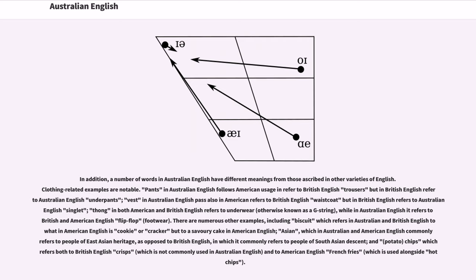There are numerous other examples, including biscuit which refers in Australian and British English to what in American English is cookie or cracker but to a savory cake in American English. Asian, which in Australian and American English commonly refers to people of East Asian heritage, as opposed to British English, in which it commonly refers to people of South Asian descent. And potato chips which refers both to British English crisps, which is not commonly used in Australian English, and to American English French fries, which is used alongside hot chips.